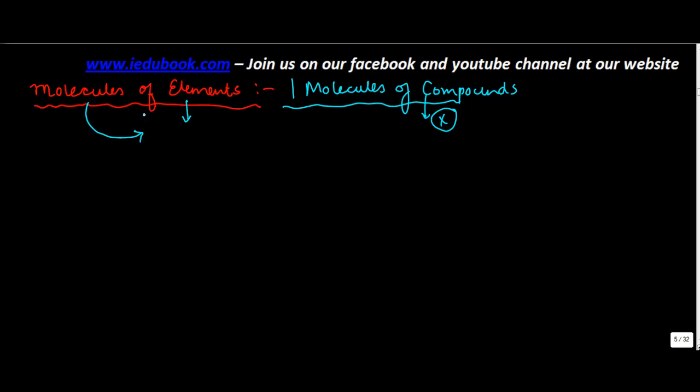Let's first concentrate on molecules of elements. Normally the molecules of an element are comprised of same type of atoms. So let's say you have atom A and you have another atom A. A could be anything, say for example helium or oxygen.